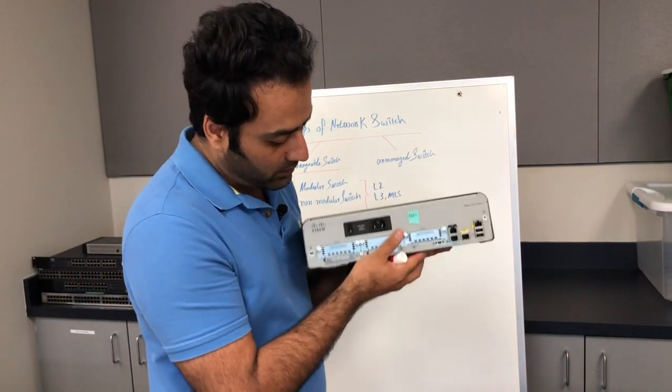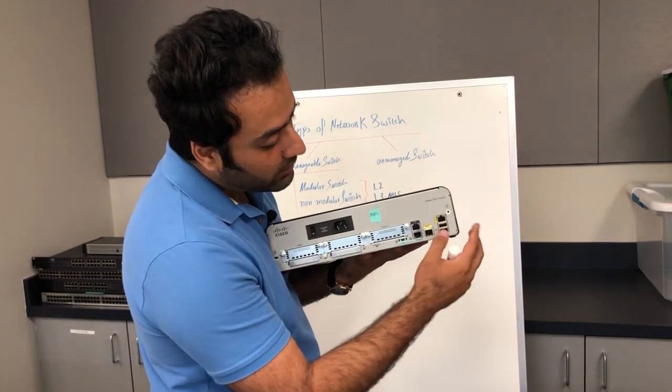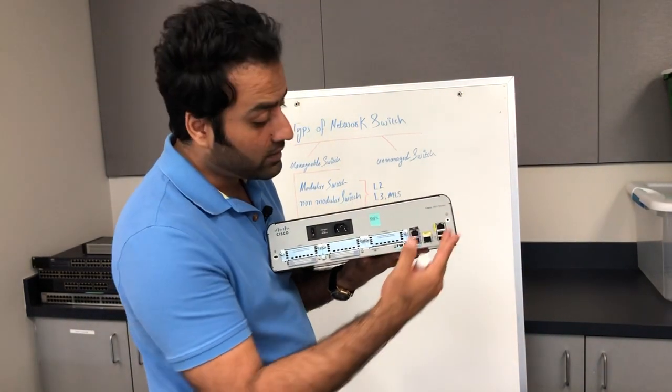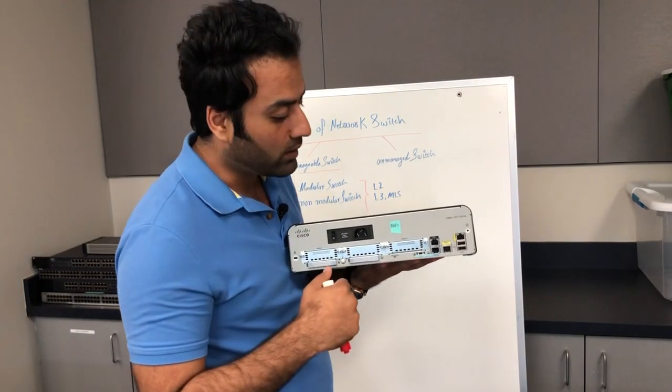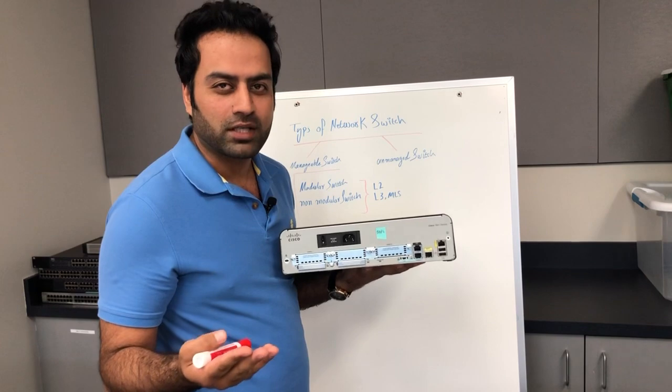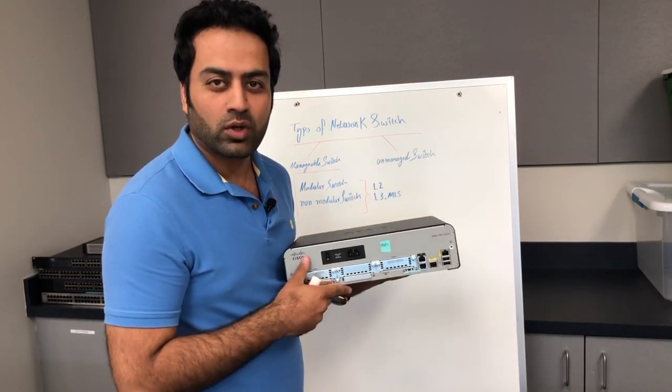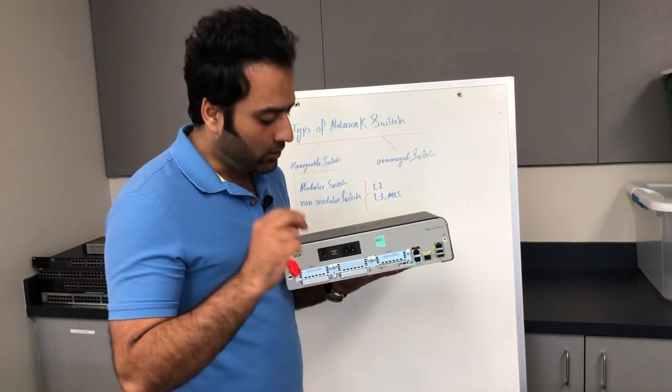For example, these are slot 1, slot 2, slot 3. We have right now gigabit interface 0/0, gigabit interface 0/1. But you need more interfaces, for example for BGP configuration or OSPF configuration or any routing protocol, whatever. It depends on your network topology or infrastructure.